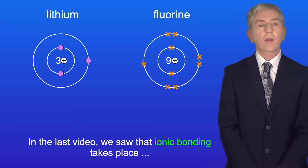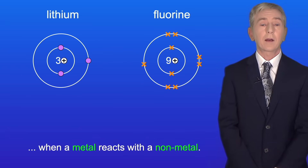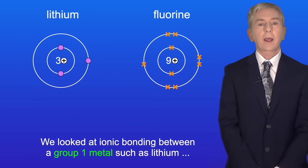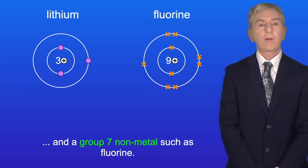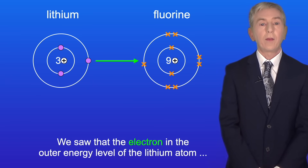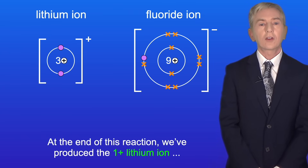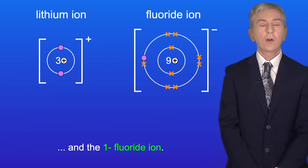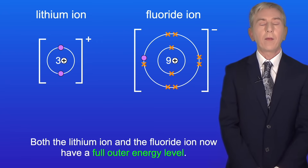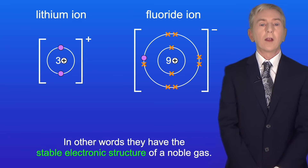In the last video we saw that ionic bonding takes place when a metal reacts with a non-metal. We looked at ionic bonding between a group 1 metal such as lithium and a group 7 non-metal such as fluorine. We saw that the electron in the outer energy level of the lithium atom moves to the fluorine atom, producing the one positive lithium ion and the one negative fluoride ion. Both ions now have a full outer energy level — the stable electronic structure of a noble gas.